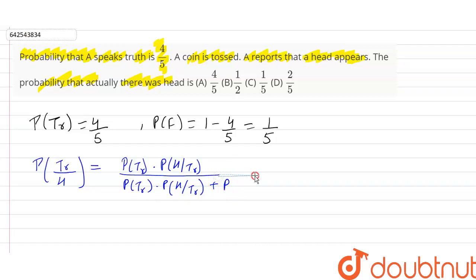here we will also consider a case when he is telling a lie, that is probability of false and probability of false when there is a tail has come and he is reporting head. So probability of tail upon when he is speaking false.